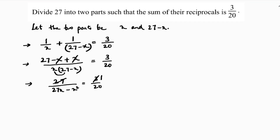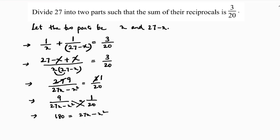Cancelling further — 3 divides into 27 nine times — we get 9 over 27x minus x squared equals 1 by 20. Cross multiplying gives 9 times 20 equals 180, so 180 equals 27x minus x squared.